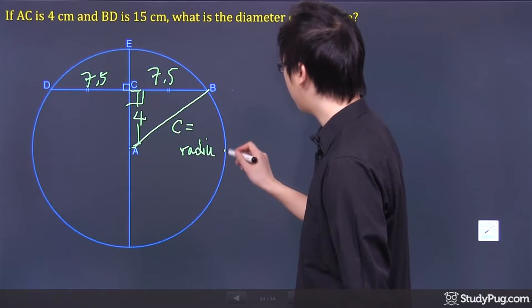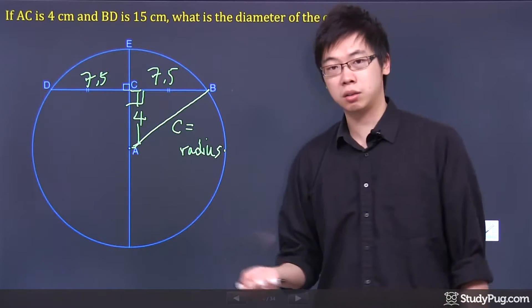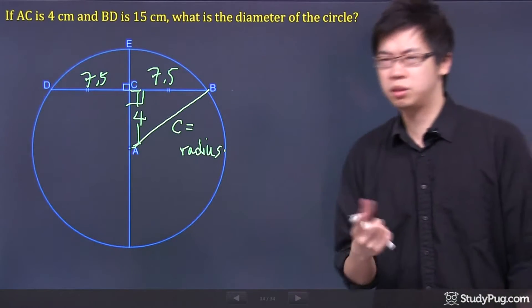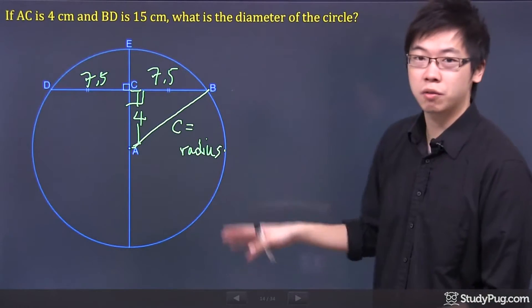Why are we looking for the radius? Well, if you can figure out your radius times by 2, what do you get? Diameter, right? So that's why we need to find the radius first.